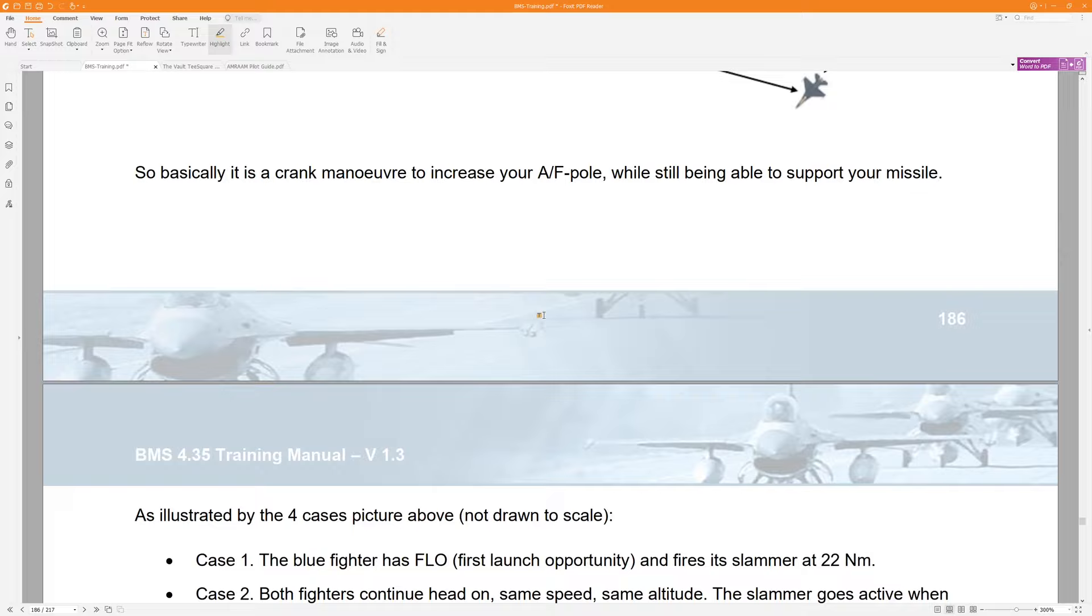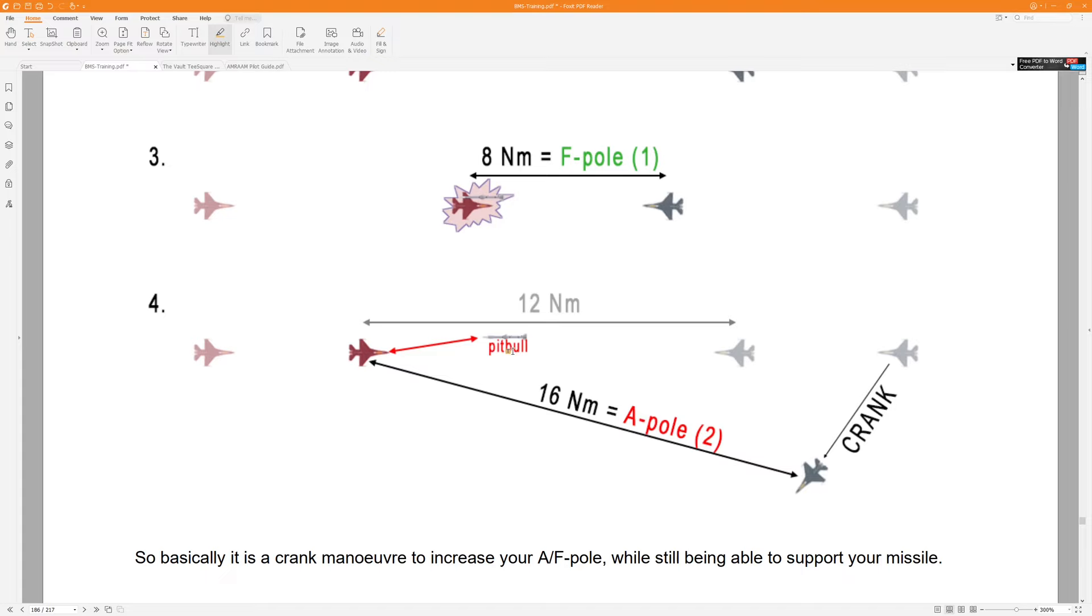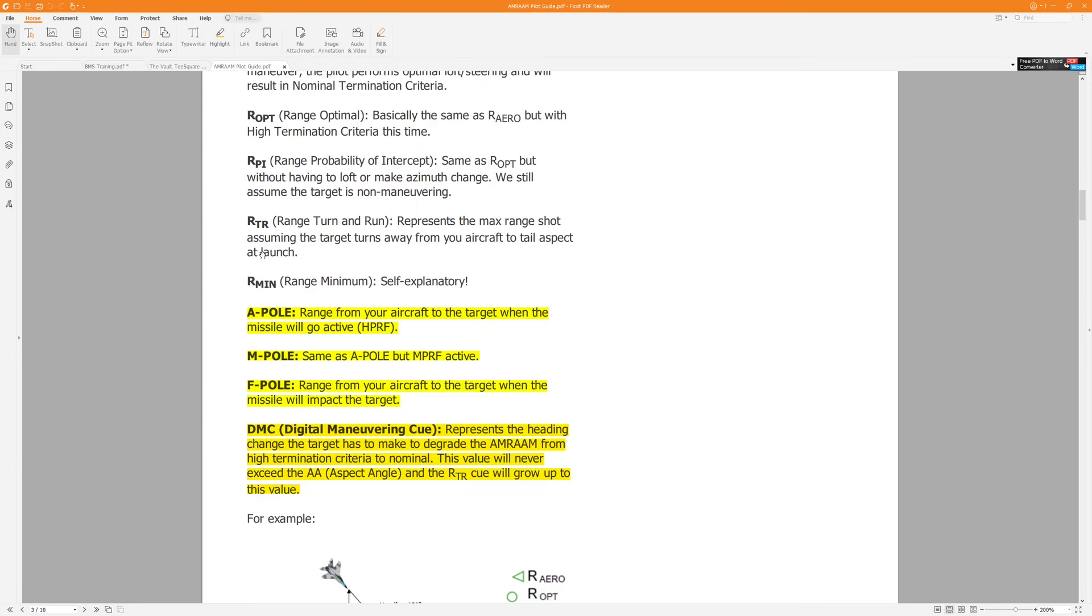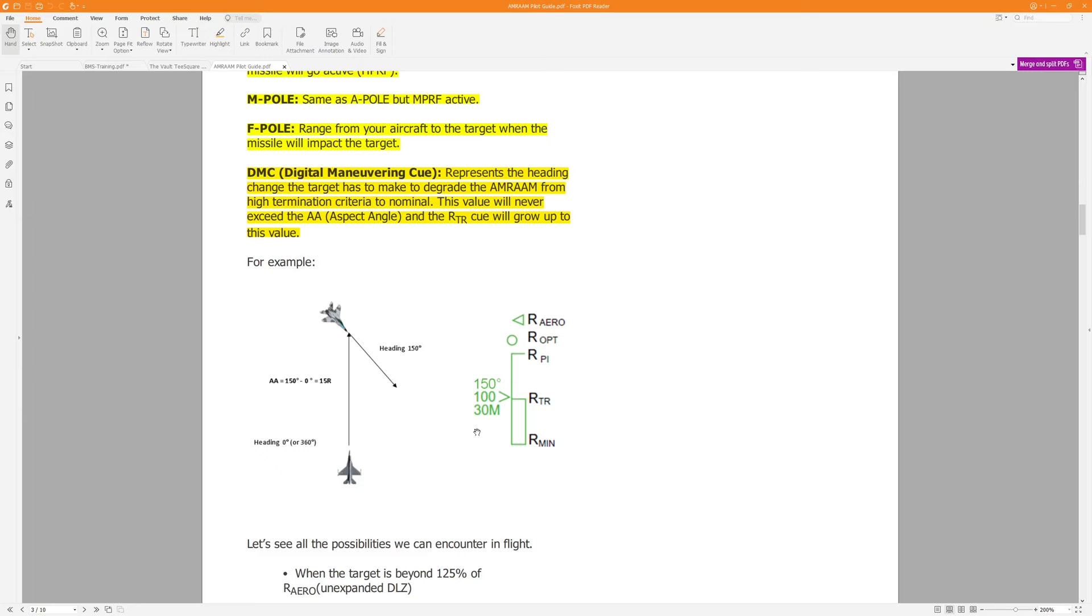There are a few terms here. There's the F pole, the A pole, which they talk about sort of incorrectly here. I think they're referring to the M pole, which is technically when the missile goes pit bull. All of these terms are defined in SupaNova's videos, but also in this AMRAAM pilot guide document, which I will link to as well. So this is called, When Should You Chuck Your Spears?, referring to AMRAAMs. It goes into all the terminology, talks about all the launch criteria.